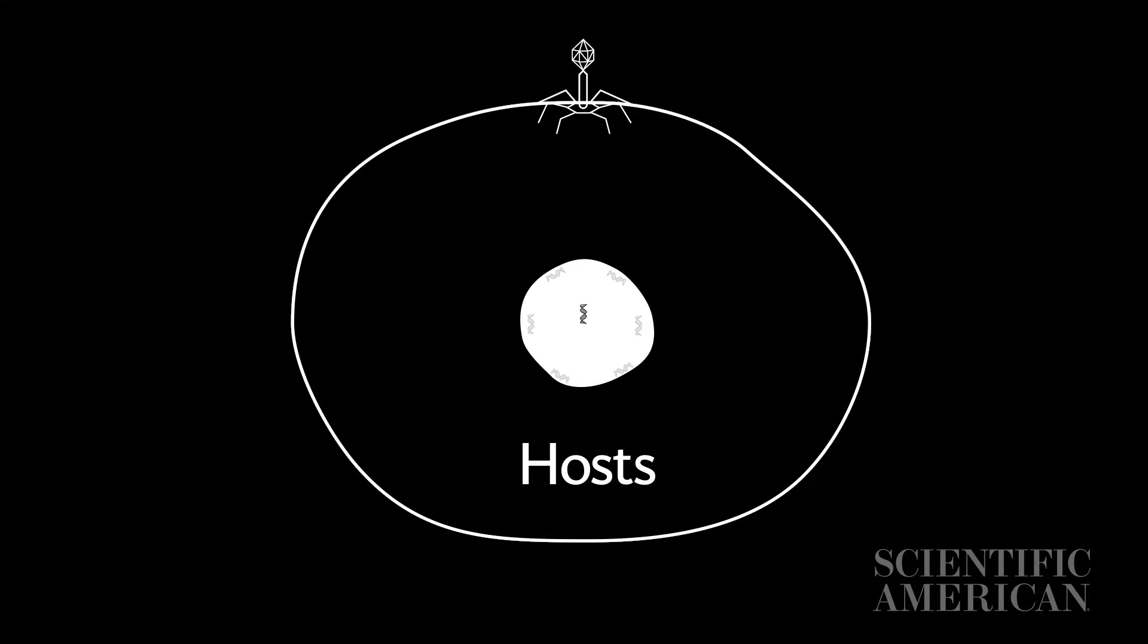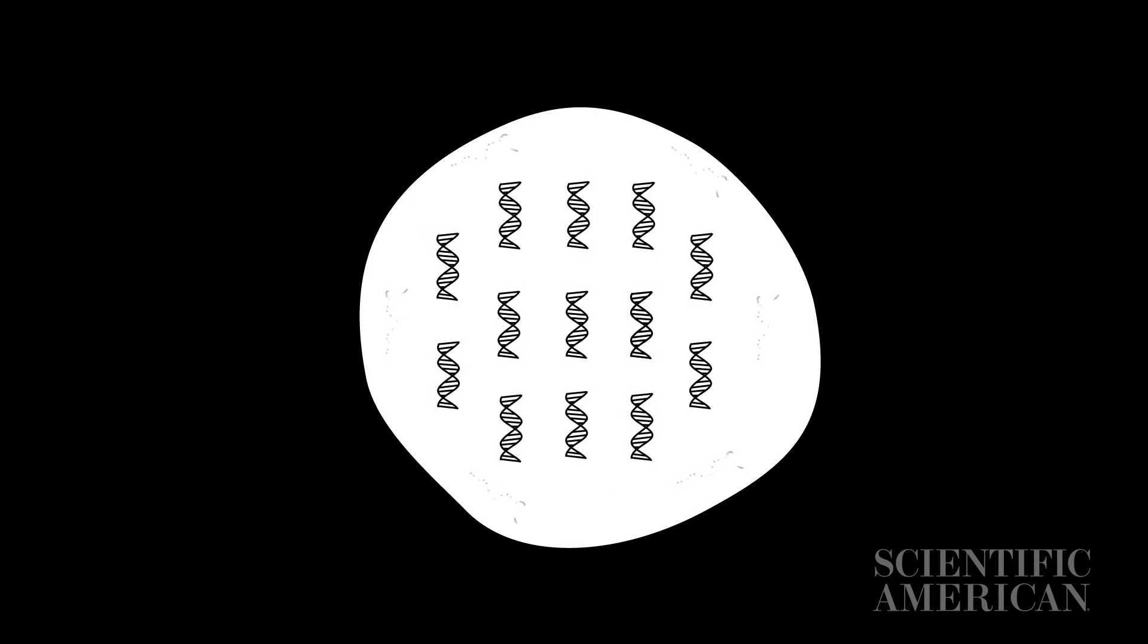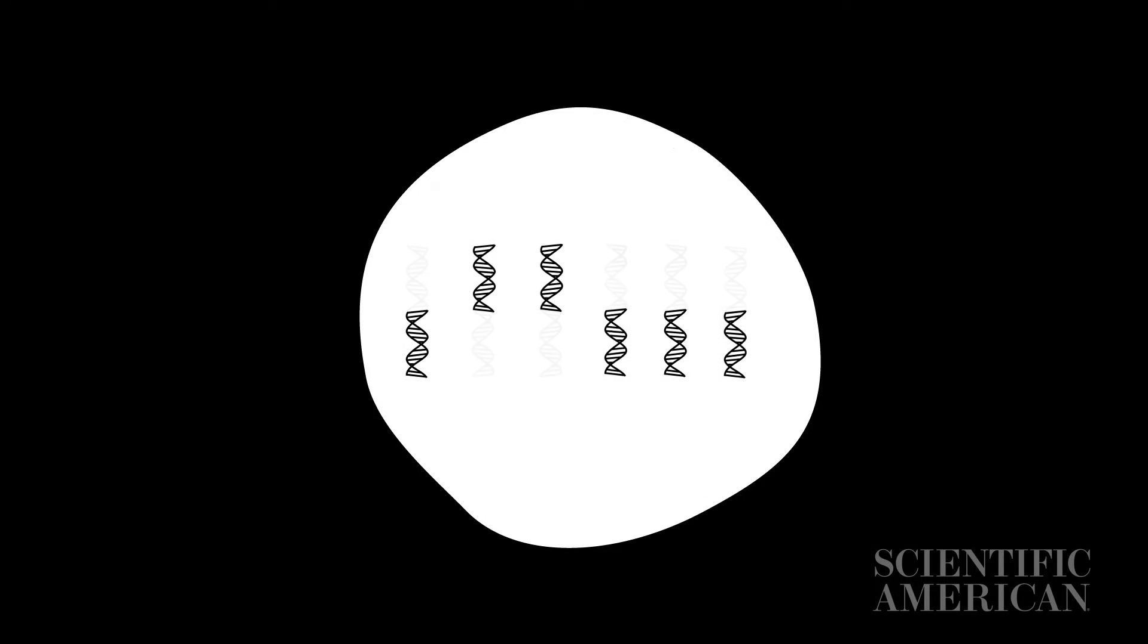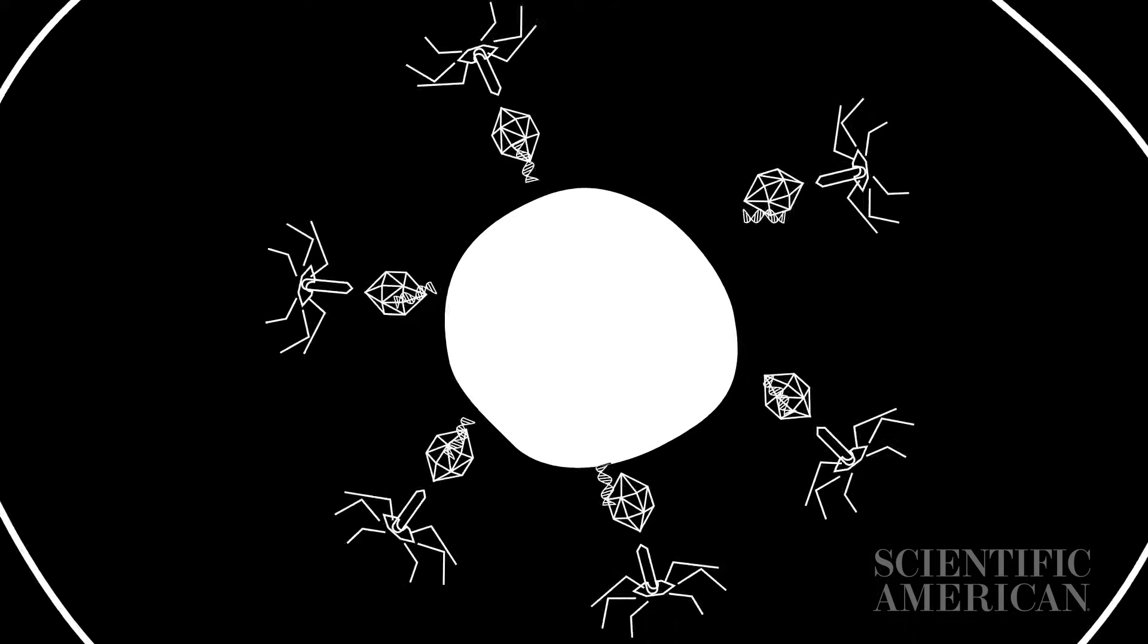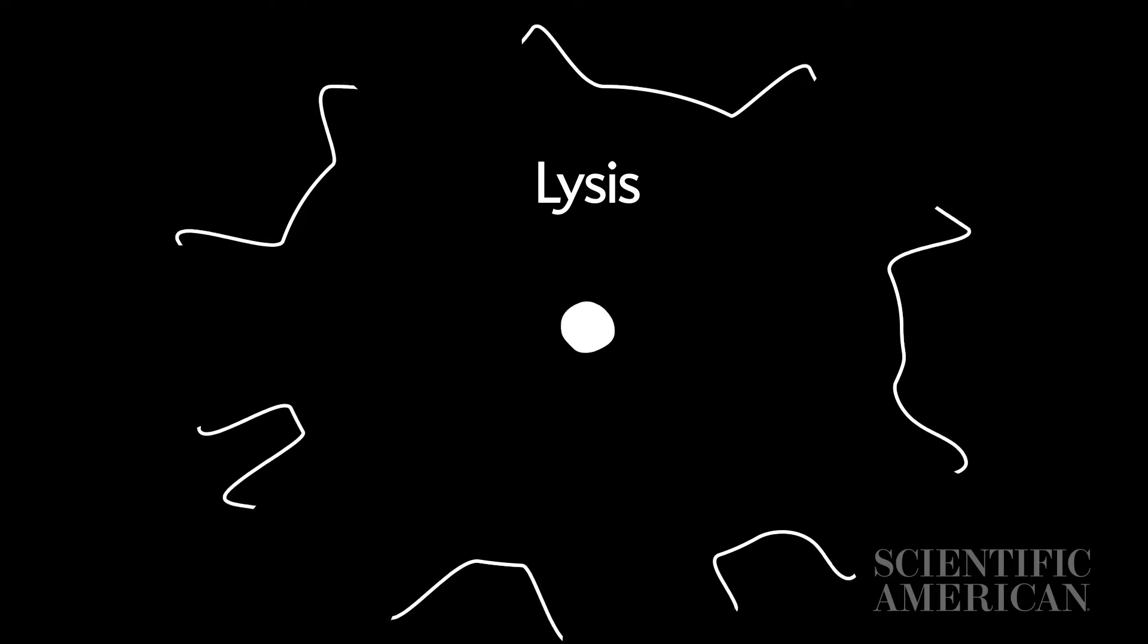They enter and take over a cell to replicate, either destroying the host's cell genetic code or splicing themselves into it. After replicating, viruses escape to hijack other cells, often destroying their host cells in a process called lysis.